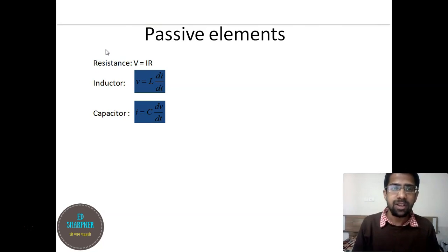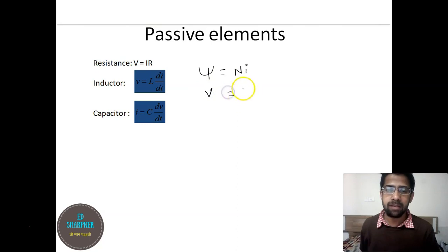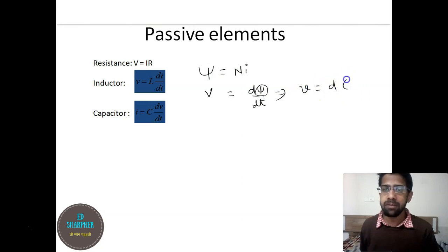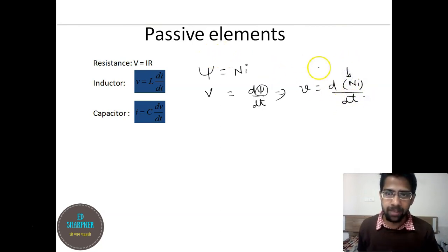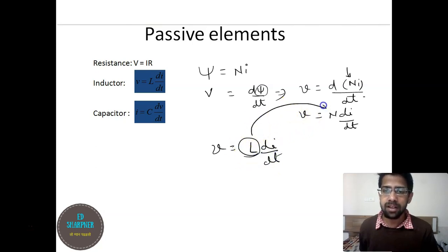For an inductor, voltage is equal to L times di/dt. The inductor stores energy in the form of electromagnetic flux: ψ = N·i, and voltage is given by dψ/dt. Substituting ψ, we get v = d(N·i)/dt, where N is the number of turns of the coil, giving N·di/dt. So v = L·di/dt, where the inductance L is a constant derived from the number of turns and the properties of the material.